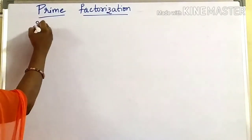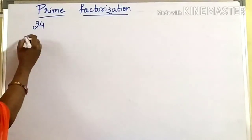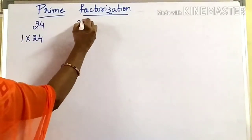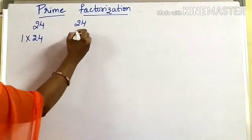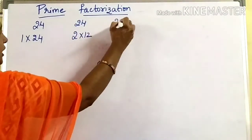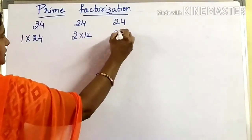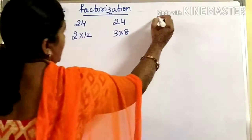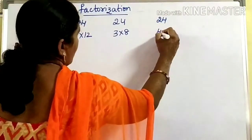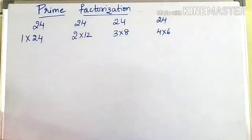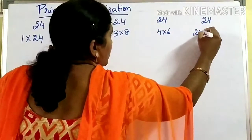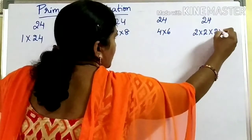For example, suppose if I take 24. 24 can be written as 1 into 24, and 24 can also be written as 2 into 12, or as 3 into 8. Still, 24 can be written as 4 into 6. Yes, 4 times 6 equals 24.